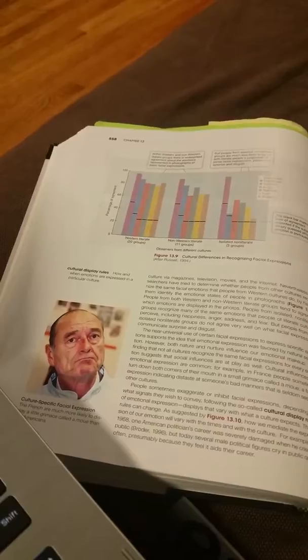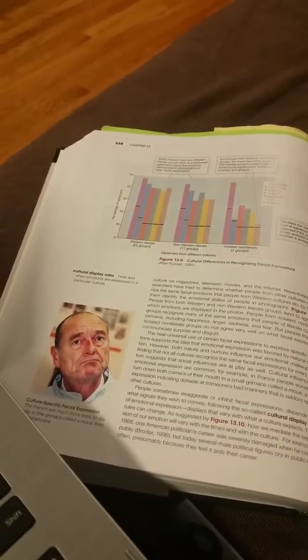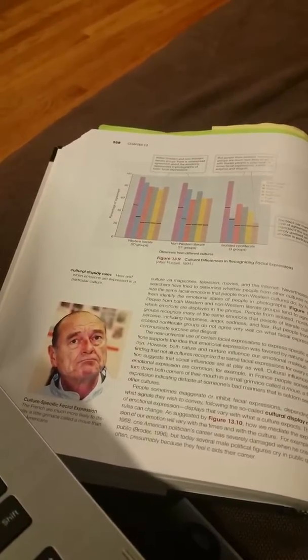The Autonomic Nervous System is a part of the nervous system that is not under our conscious control, consisting of the sympathetic and parasympathetic nervous systems.